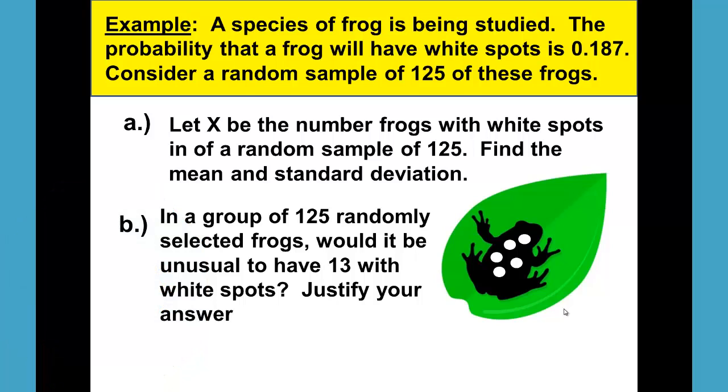Let x be the number of frogs with white spots in a random sample of 125. Find the mean and standard deviation. Part b, in a group of 125 randomly selected frogs, would it be unusual to have 13 with white spots? Justify your answer.